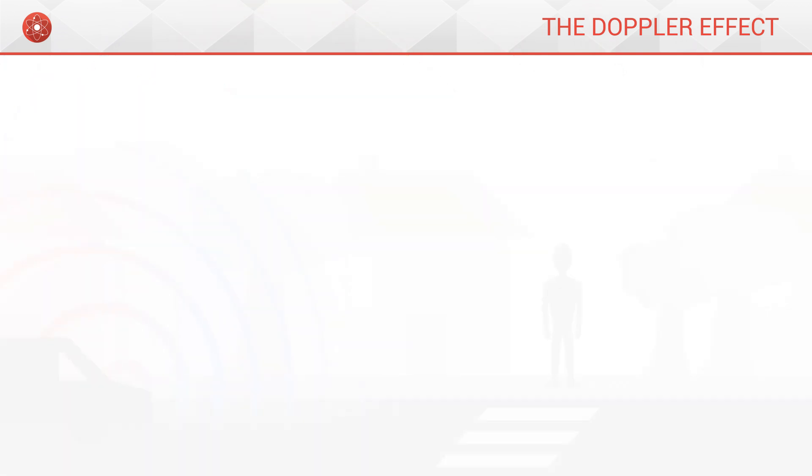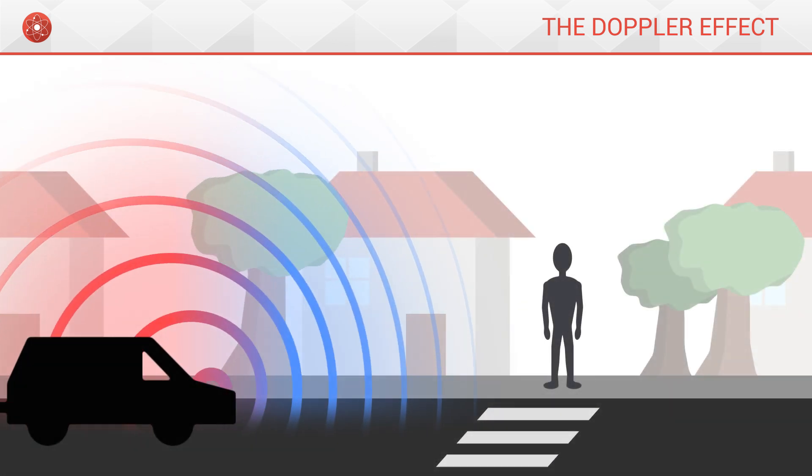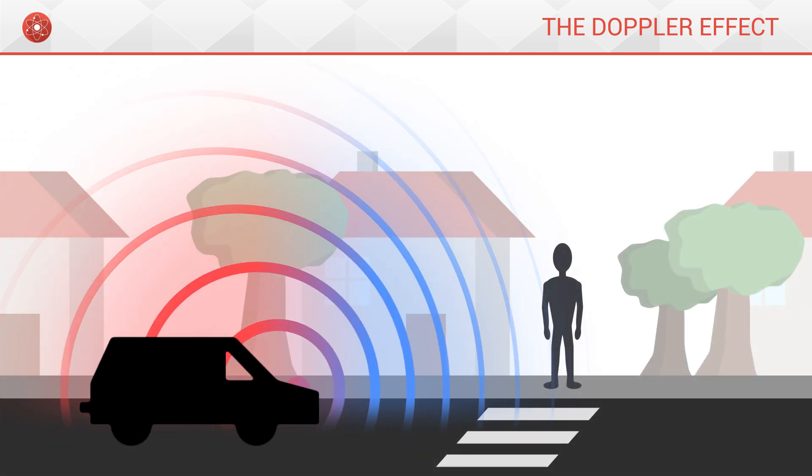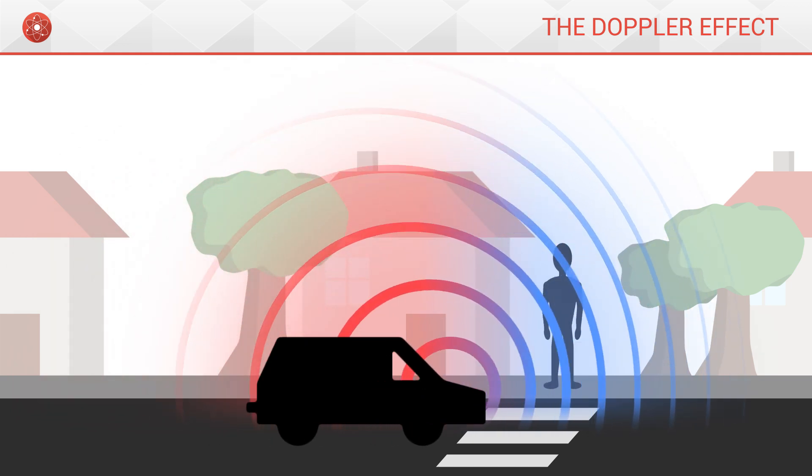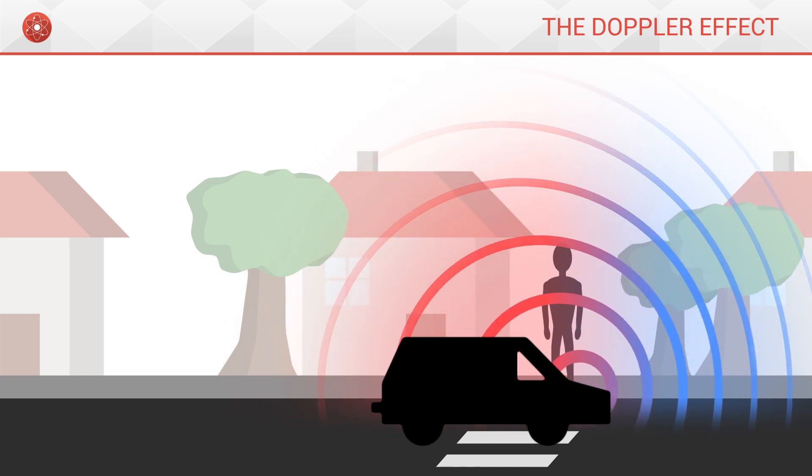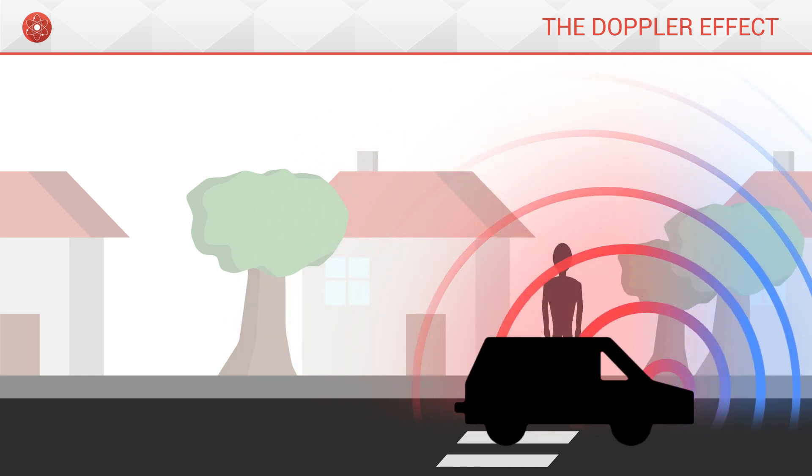A good example of the Doppler effect is the movement of a car. As the car gets closer to us, we hear a higher-pitched sound, while the sound it produces becomes progressively lower-pitched when it crosses us and moves further away.